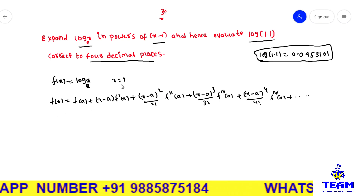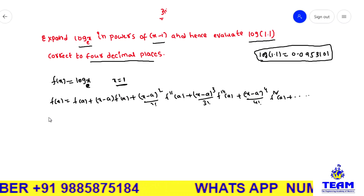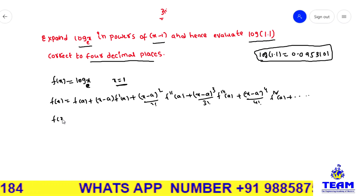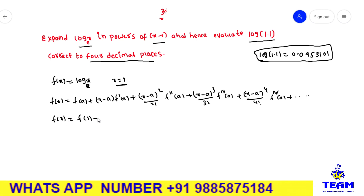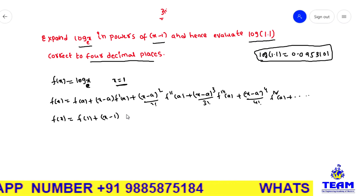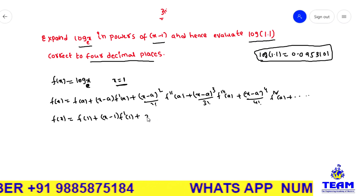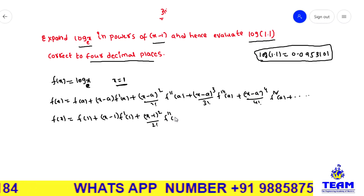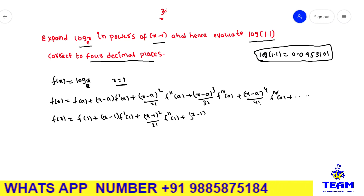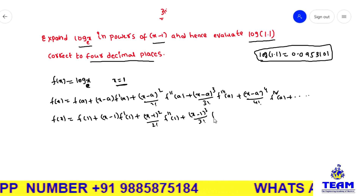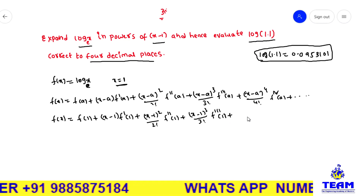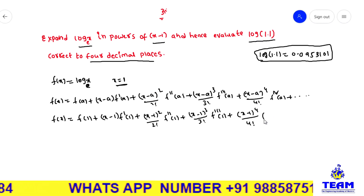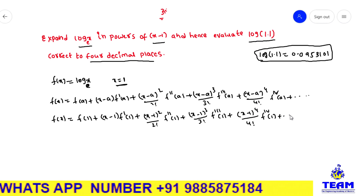Now we are expanding about x = 1, that is in powers of (x minus 1), so we put a = 1. Thus f(x) = f(1) + (x−1)·f'(1) + (x−1)² / 2! · f''(1) + (x−1)³ / 3! · f'''(1) + (x−1)⁴ / 4! · f''''(1) + and so on.